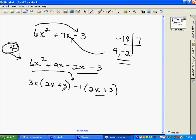Notice these two are the same. They're our common term, so we pull that out. We have left over 3x minus 1. That's the answer to our problem.